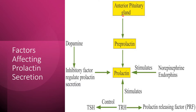Factors that inhibit prolactin secretion include dopamine and its agonists, somatostatin, prolactin itself, and GABA. The prolactin releasing factor (PRF) is secreted from the hypothalamus; however, the exact nature of the chemical is not yet known. Thyroid releasing hormone stimulates prolactin secretion. Dopamine has been identified as a prolactin inhibiting factor secreted from the hypothalamus. Somatostatin also inhibits prolactin secretion.